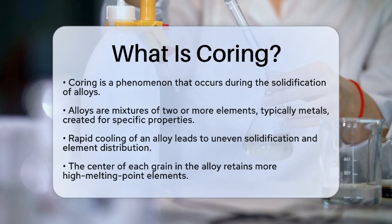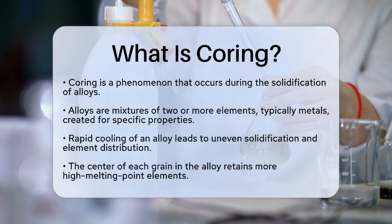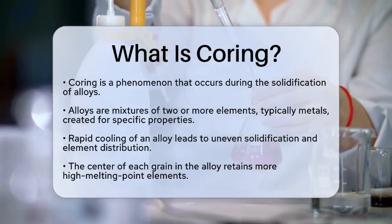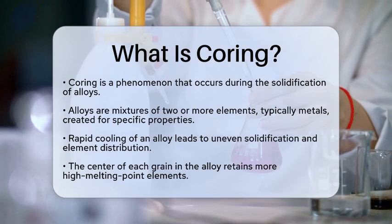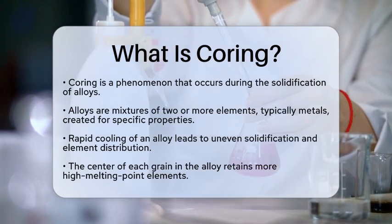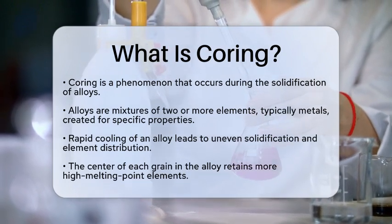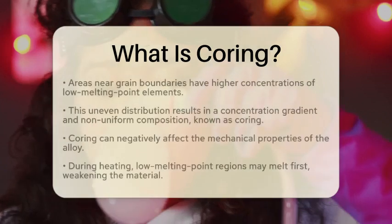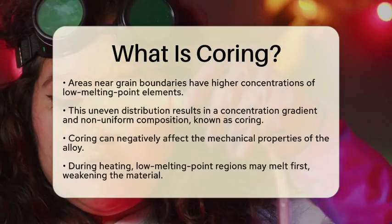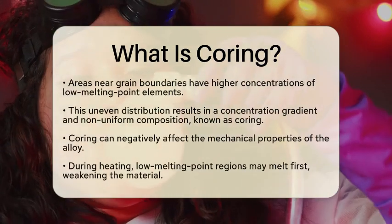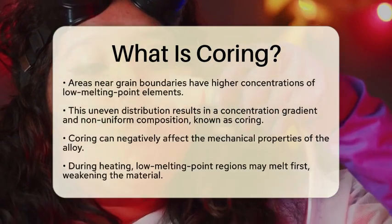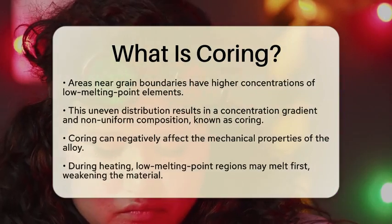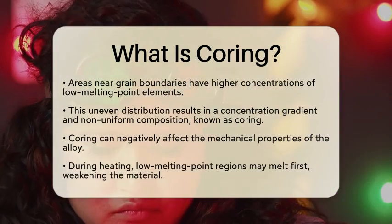The center of each grain in the alloy tends to hold onto more of the high melting point element. In contrast, the areas closer to the grain boundaries contain a higher concentration of the low melting point element. This uneven distribution creates a concentration gradient across the grain, leading to a non-uniform composition known as coring.